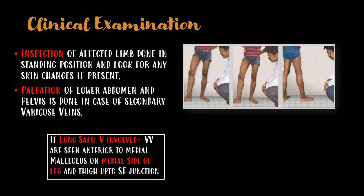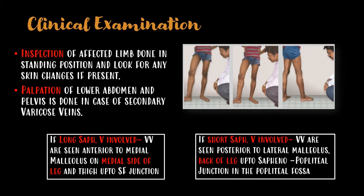If the long saphenous vein is involved, the varicose veins are seen anterior to the medial malleolus, on the medial side of the leg and thigh up to the saphenofemoral junction. If the short saphenous vein is involved, varicose veins are seen posterior to the lateral malleolus, back of the leg up to the saphenopopliteal junction in the popliteal fossa.